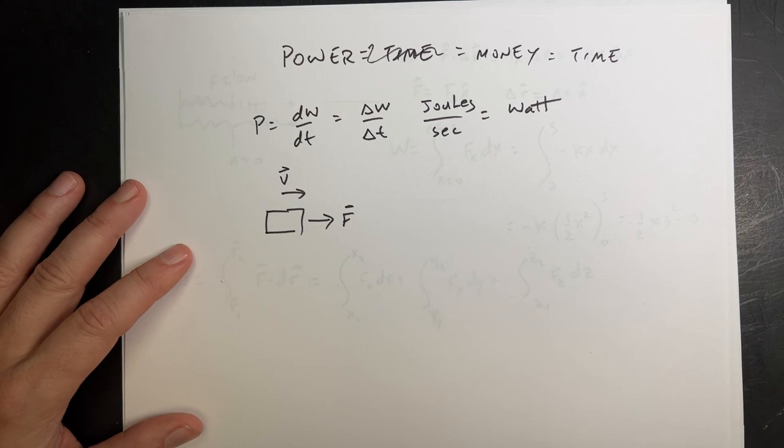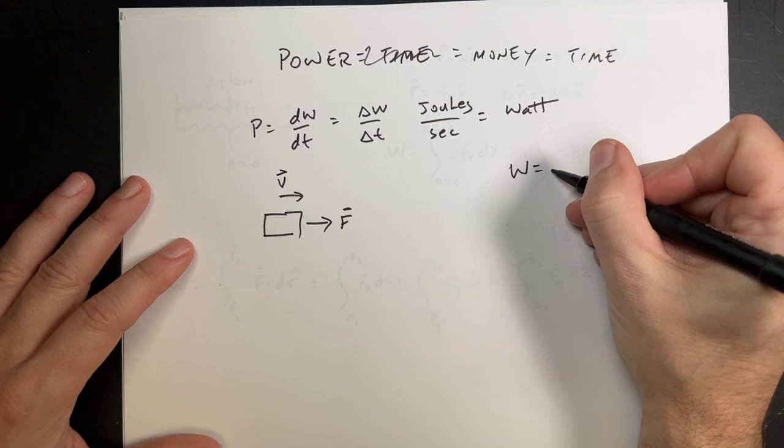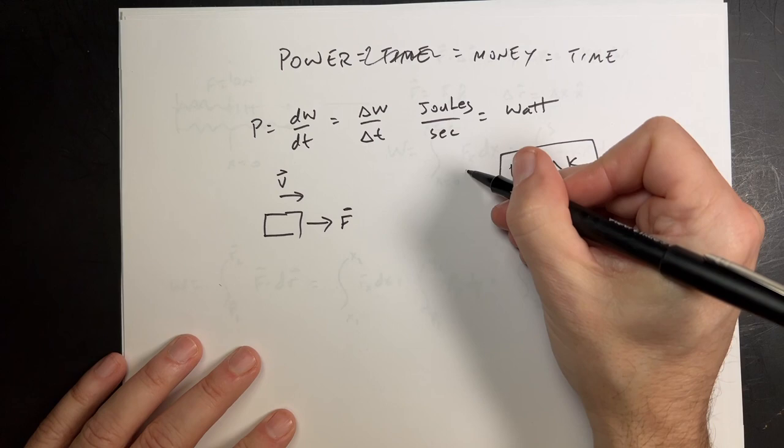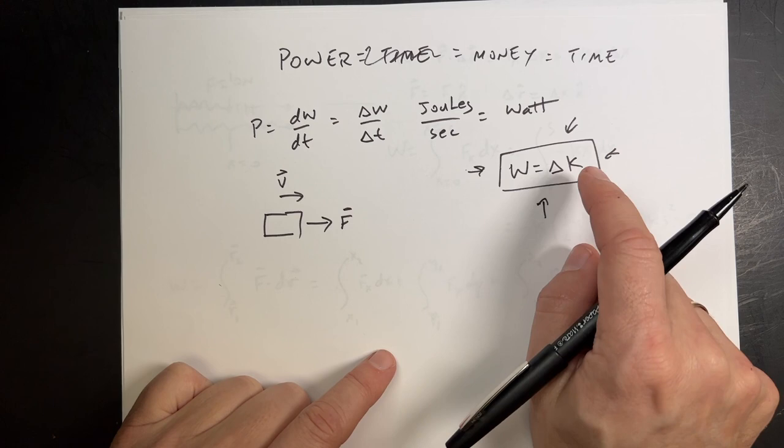The work-kinetic energy theorem is the whole point: work equals the change in kinetic energy. This is a big deal — it says that if I have some system, the work changes the energy of the system. At this point, the only energy we have is kinetic energy, and this is how we connect work and kinetic energy — that's the name of the chapter.